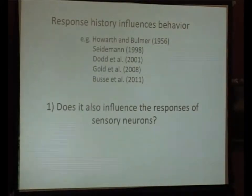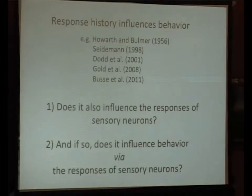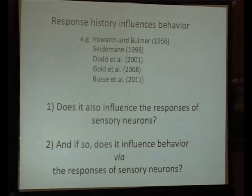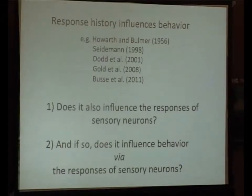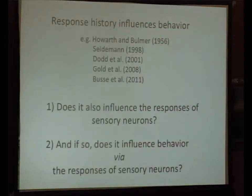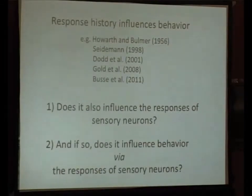To my knowledge that hasn't really been shown yet. And if that is the case — and I should say it is — then we can ask: does the influence of response history on behavior get mediated by the responses of the sensory neurons? The second question is a reformulation of the expectation bias scheme. Does response history generate some kind of expectation about what's going to happen on the next trial, and does this expectation then influence the responses of neurons, thereby influencing the actual behavioral response? Is this how choice history influences behavior on the current trial?